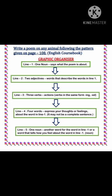In line number 1, we will write one noun that says what the poem is about. Line number 2, we will write two adjectives — words that describe the word in line number 1. After that, in line number 3, we will write three verbs — action words — in the same form ending with -ing or -ed.